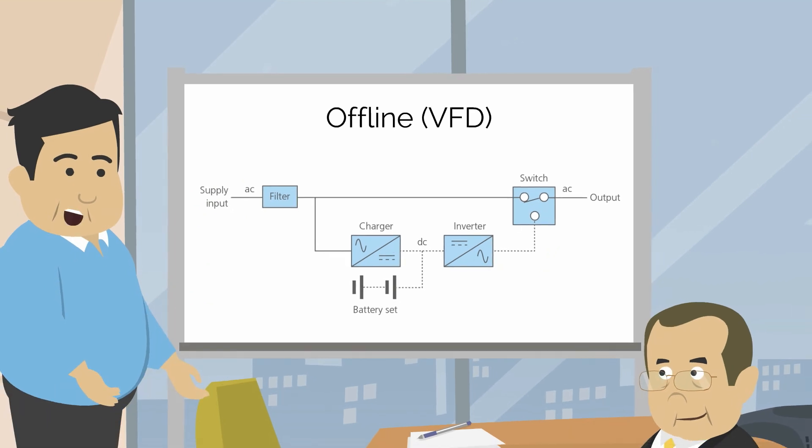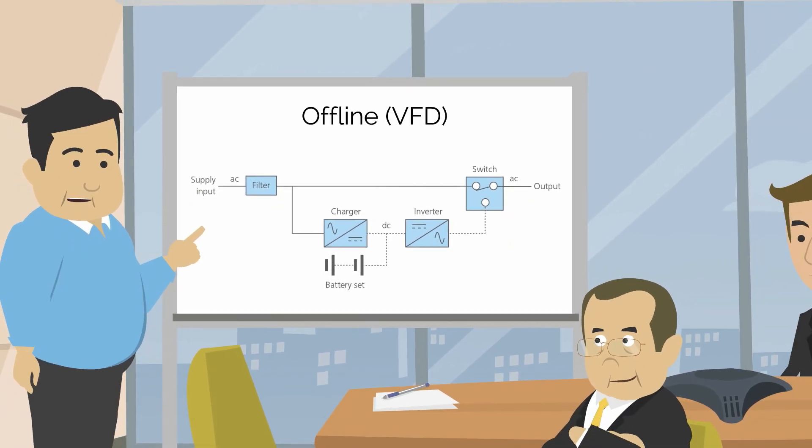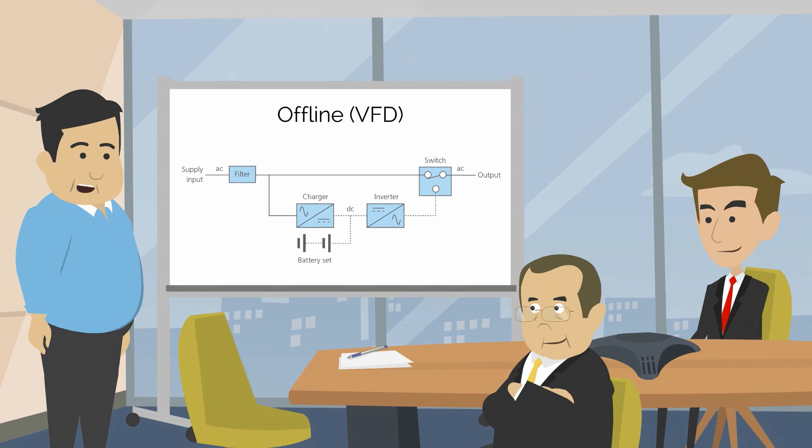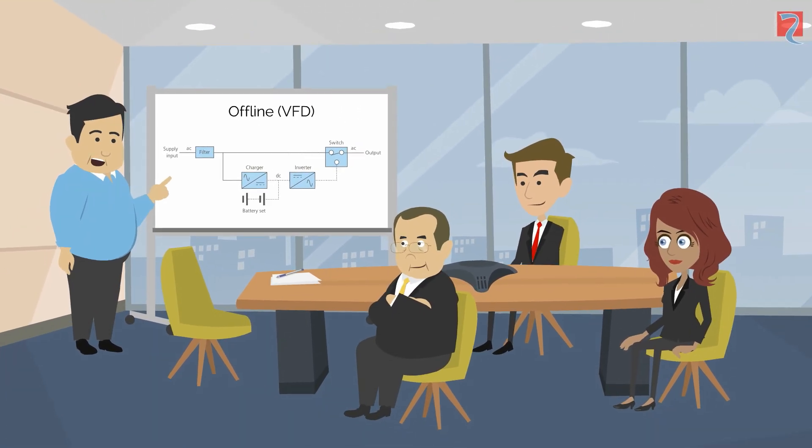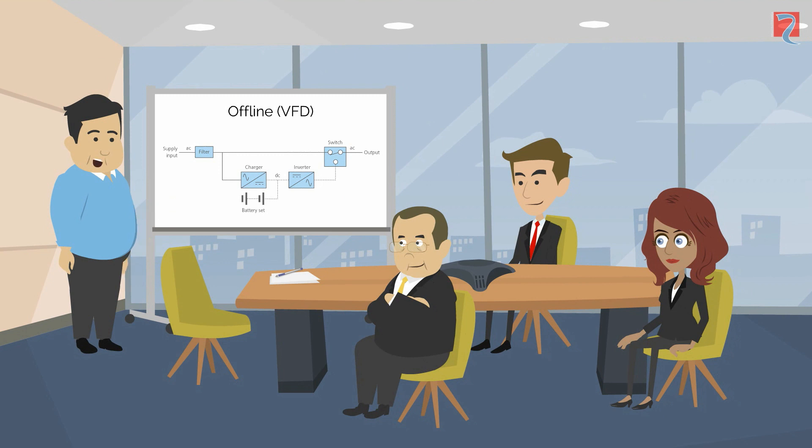Although this sounds a very short period of time, it is enough of a break in power for sensitive modern equipment to notice. Due to its design, an offline UPS does not protect against other mains born disturbances. Therefore, this type should only be used for non-critical equipment.